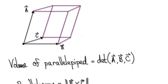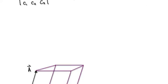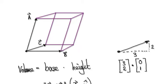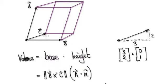Following on from the previous video, we got to this stage where the volume is given by base times the vertical height — where the base is the area of the parallelogram, multiplied by the vertical height.